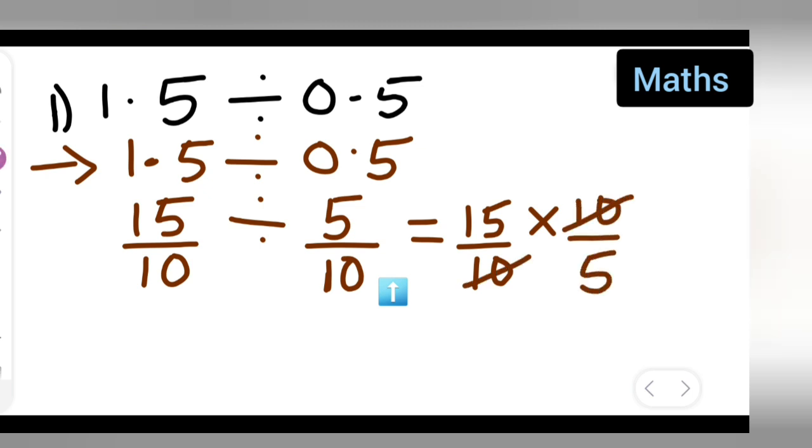So here 10 and 10 is going to get cancelled. 5 times 3 is 15. So basically your answer is 3. Therefore you can say that 1.5 divided by 0.5 will give you 3.